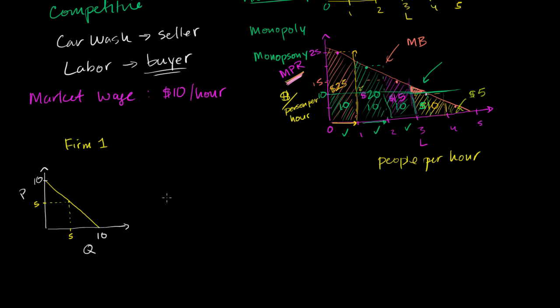And let's say firm two's demand looks something like this. And I'll try to align them. So firm two's demand looks something like this. And the axes are going to have the exact same labels. This is quantity. This is price right over here. This is 5. This is 10. And then this is 15.